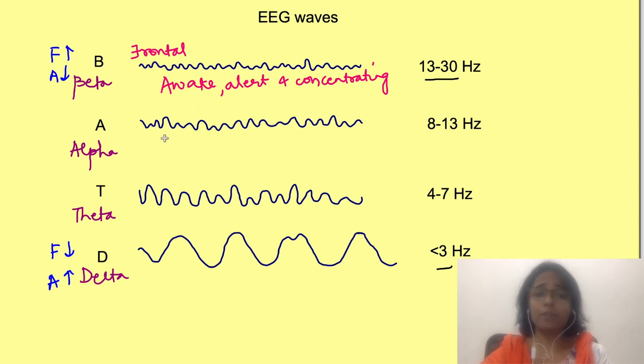Alpha waves are seen in awake but relaxed state and are seen most prominently in parietal and occipital regions. Theta waves are seen in light sleep, while delta waves are seen in deep sleep.